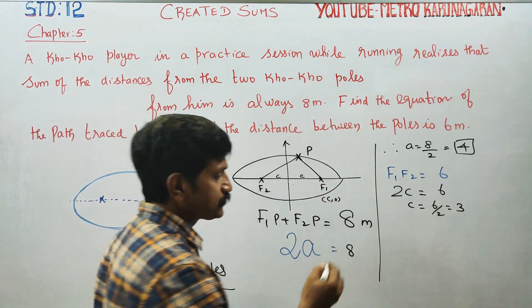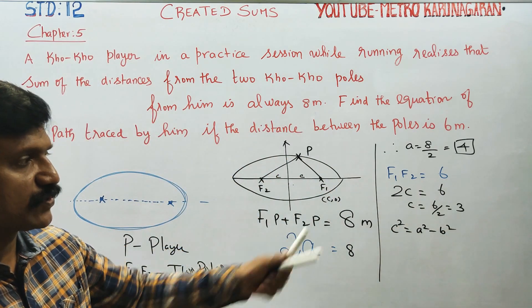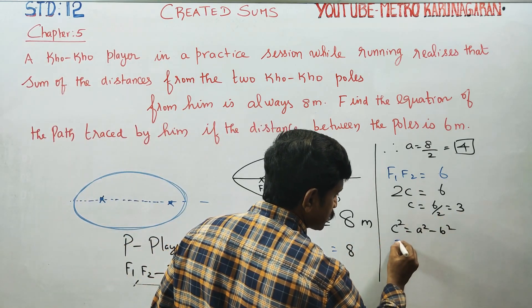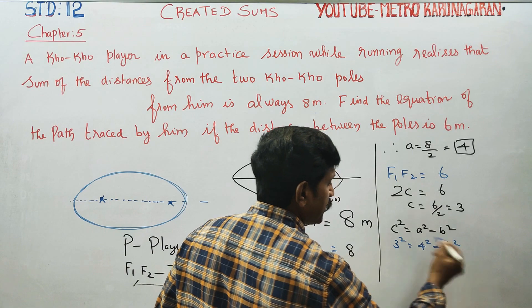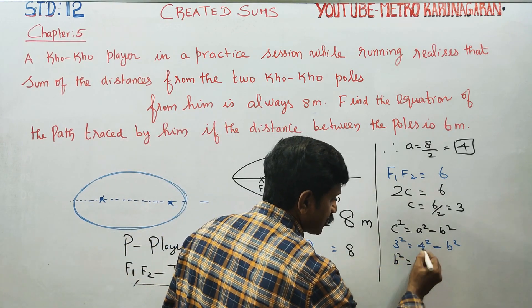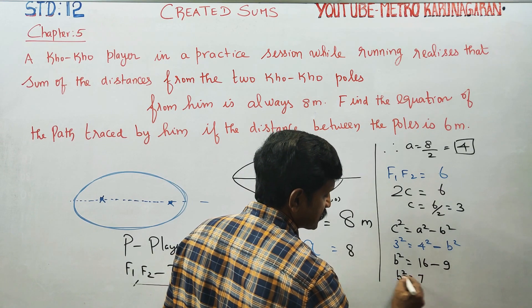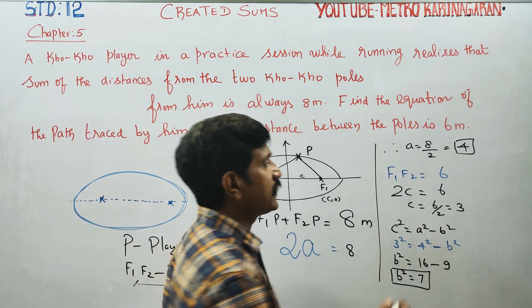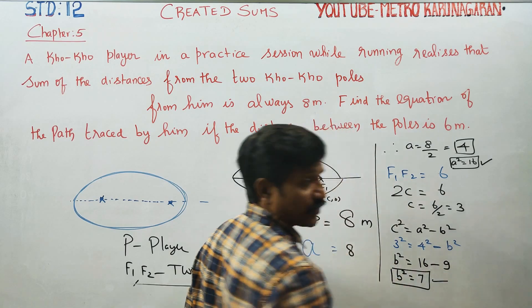The ellipse formula is C square equals A square minus B square. So C square equals A square minus B square. A square equals 16, C square equals 9. Therefore B square equals A square minus C square equals 16 minus 9 equals 7. So B square is equal to 7. A square is ready and B square is ready.